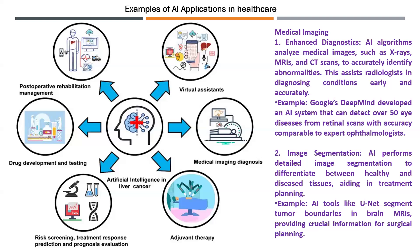For example, Google's DeepMind has developed an AI system that can detect over 50 eye diseases from retinal scans with accuracy comparable to expert ophthalmologists. Another example is image segmentation, where AI differentiates between healthy and diseased tissue for better treatment planning. A tool called UNET segments tumor boundaries in brain MRIs, providing crucial information for surgical planning.